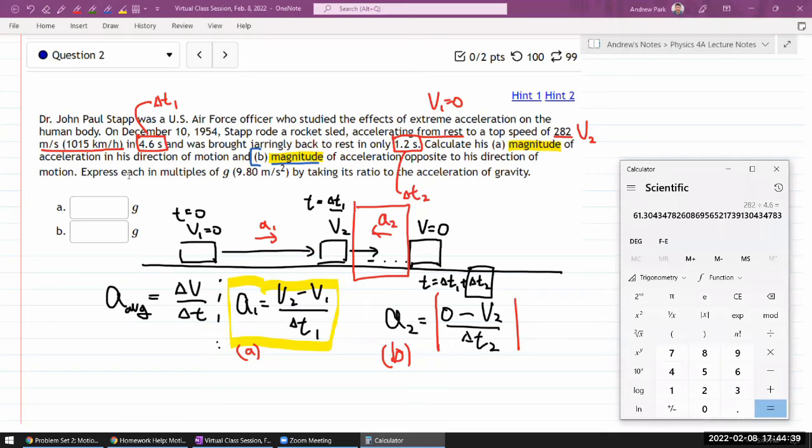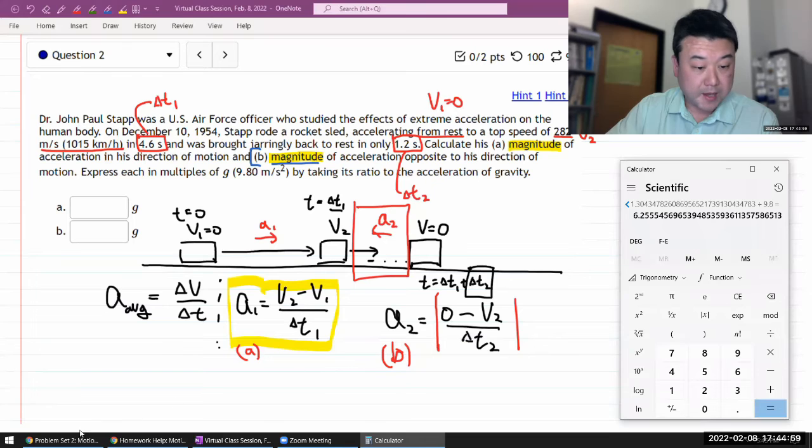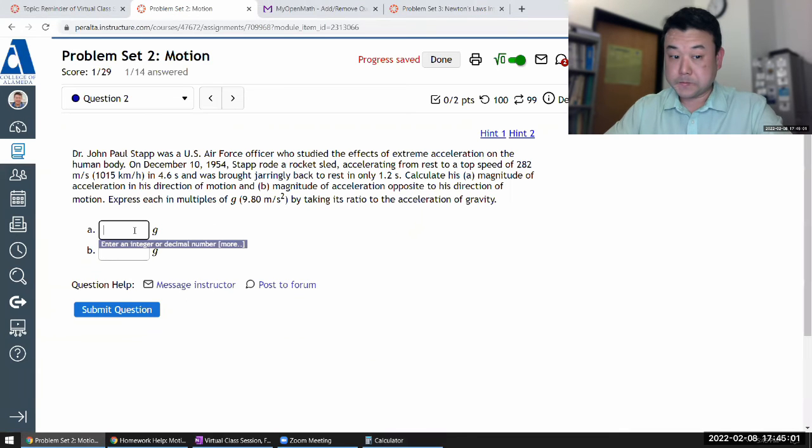So a1 would be 282 minus zero divided by 4.6 seconds, so the acceleration is 61.3 meter per second squared. But they want us to express this in multiples of g, the gravitational acceleration, so the way to get to it is take this number and divide by g, 9.8 meters per second squared. So the units will cancel out and this is the coefficient that goes in front of g. So 6.26 would be a.